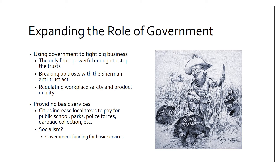Another important strategy used by the progressives was expanding the role of government. The progressives wanted to make government more powerful in order to stop big businesses. When the United States first began, most businesses were small; but as the Industrial Revolution happened, businesses got bigger while government stayed the same. So progressives said the government had to grow too. They wanted the government to use the Sherman Antitrust Act to break up the country's most powerful monopolies, and to pass laws ensuring workplaces were safe and products were healthy and of high quality.